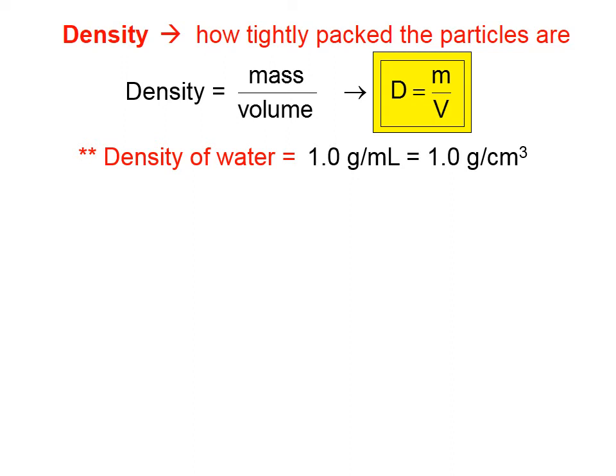Now the density of water does vary ever so slightly with temperature. In fact, it's the most dense at four degrees Celsius. But, as a general rule of thumb, water has a density of one gram per milliliter or one gram per cubic centimeter.